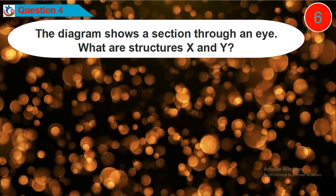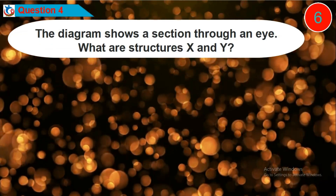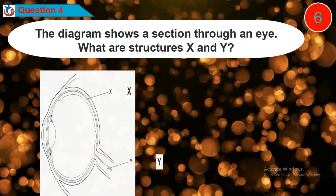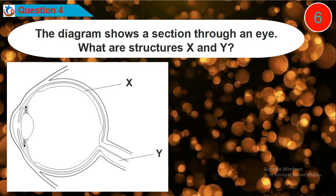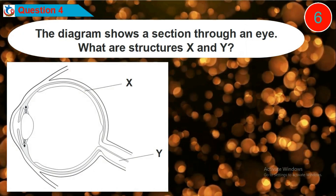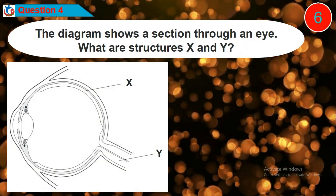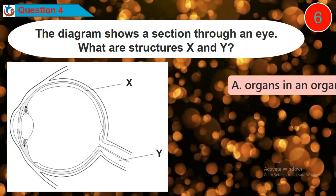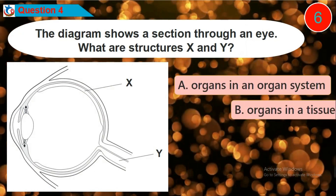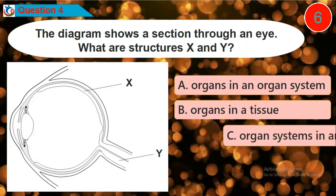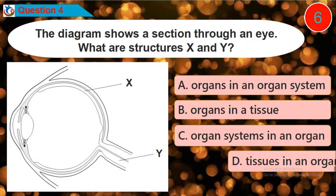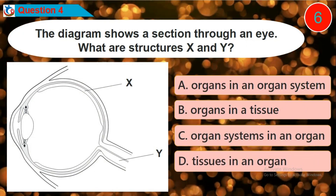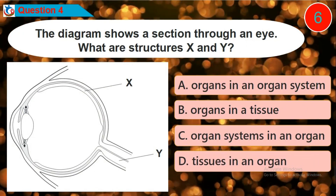Question 4: The diagram shows a section through an eye. What are structures X and Y? Is it option A, B, C, or D?